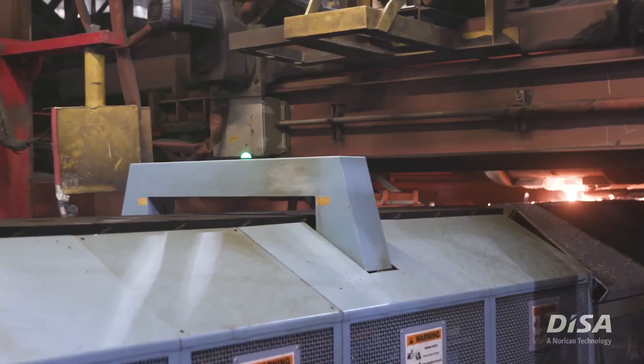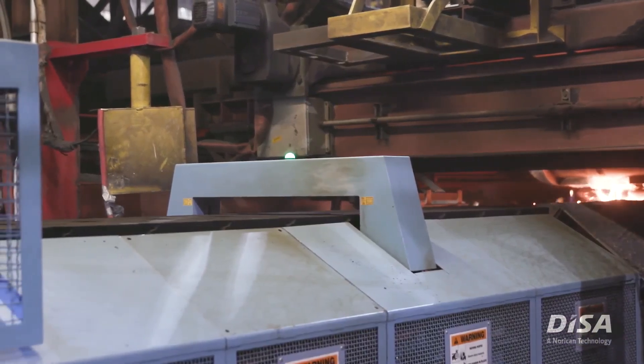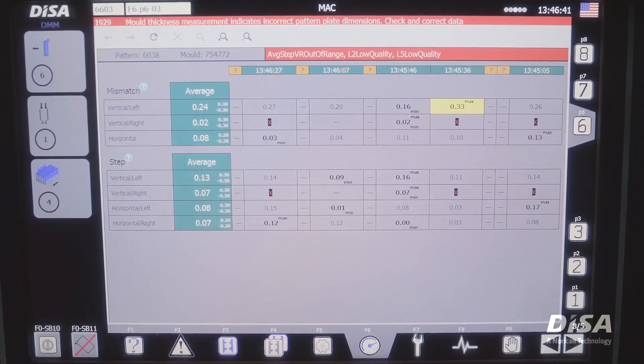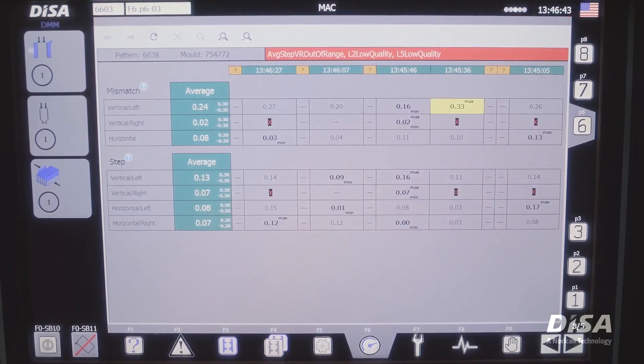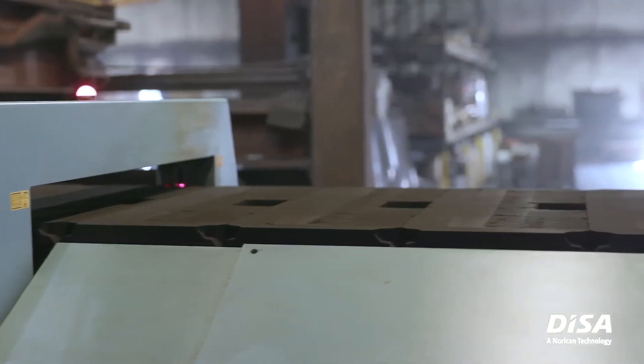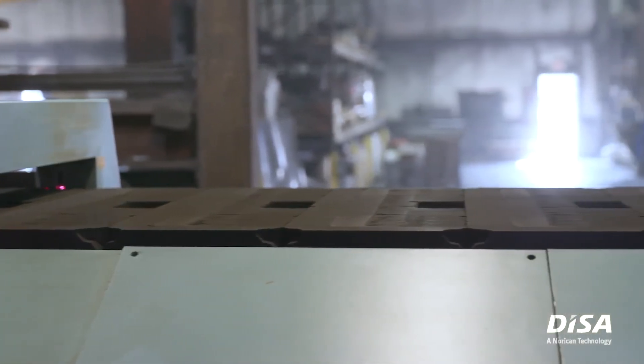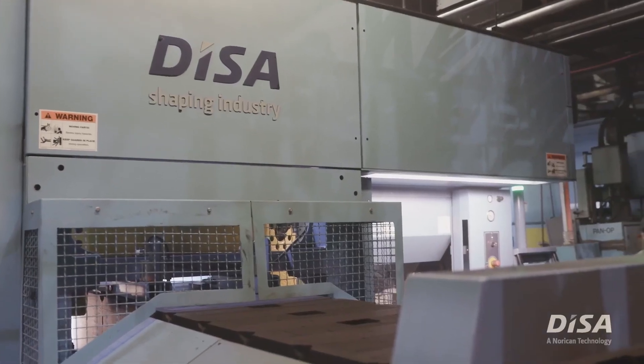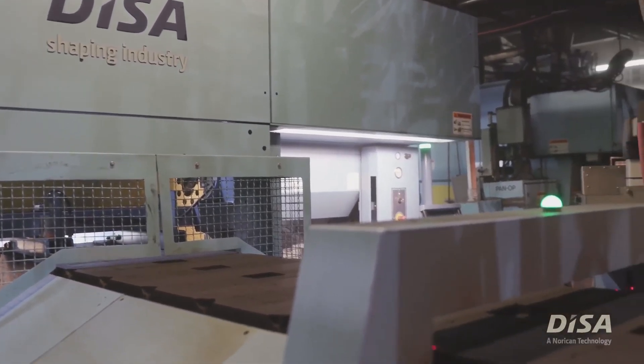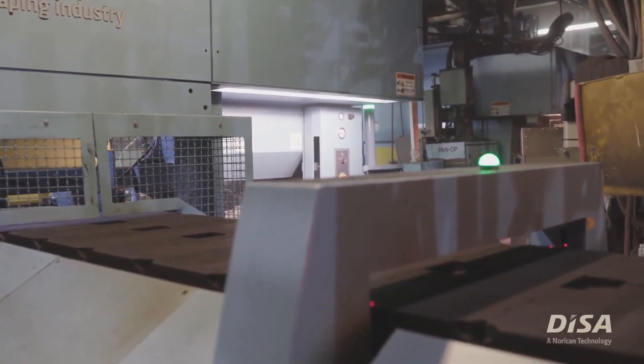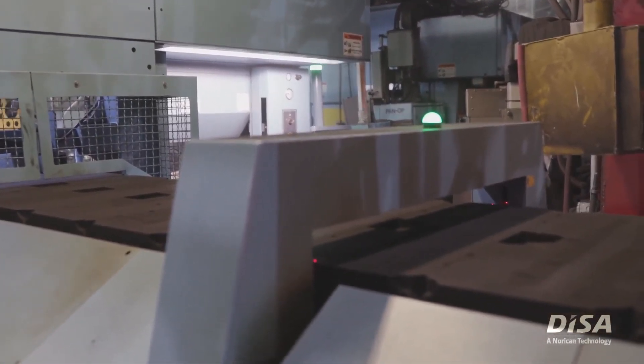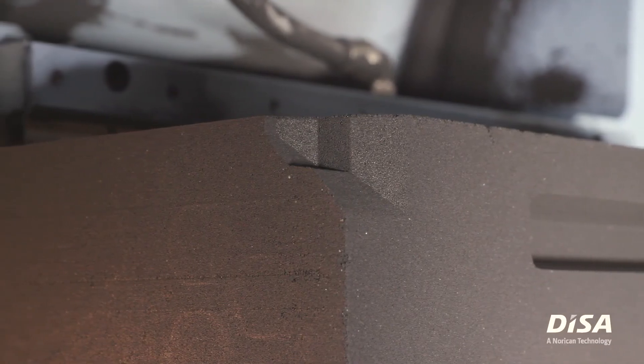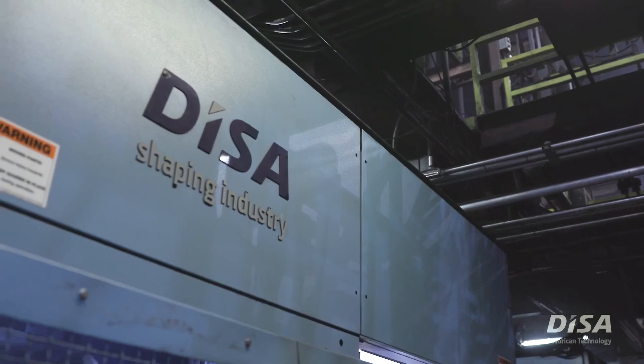The DISA Mold Accuracy Controller adds a new dimension to casting precision. By warning operators when molds are out of tolerance and preventing pouring molds with gaps, the MAC saves time and money by minimizing scrap, rework, remelting, and downtime. It also allows you to explore and expand your knowledge about your molding machine and your sand preparation process. Supply castings with tighter tolerance requirements and improve your overall casting quality.